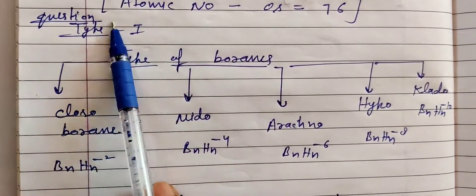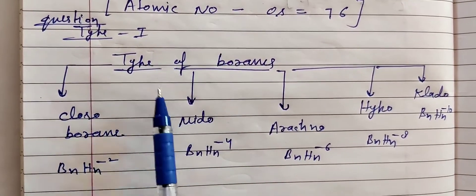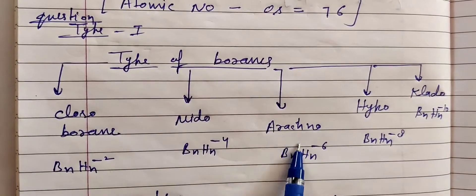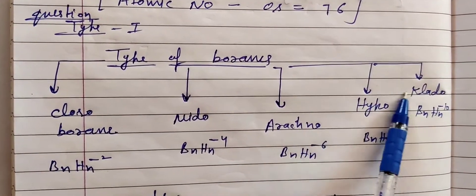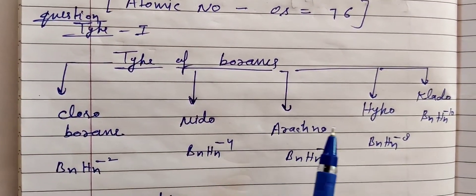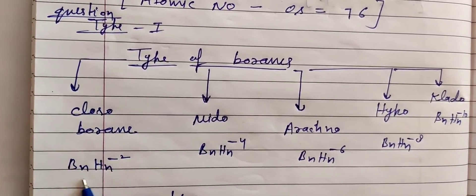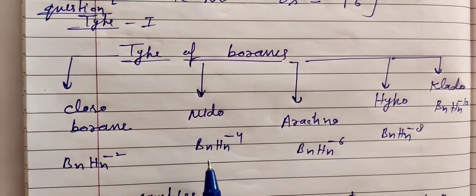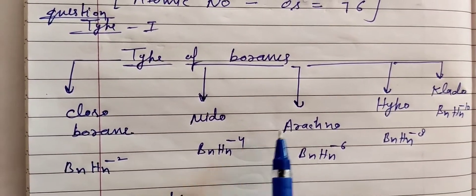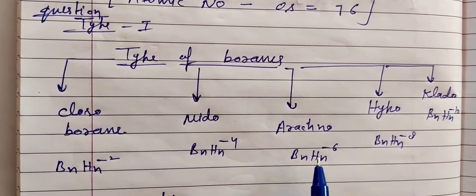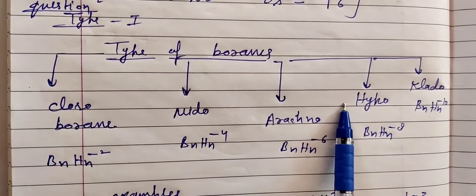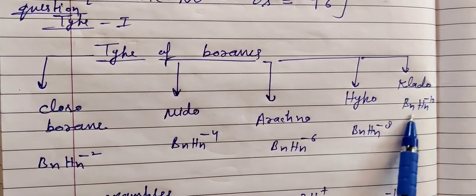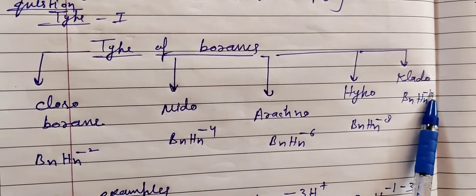Types of boranes: first type is closo boranes with formula BnHn²⁻, nido boranes BnHn₋₄, arachno boranes BnHn₋₆, hypo boranes BnHn₋₈, and clado boranes BnHn₋₁₀.